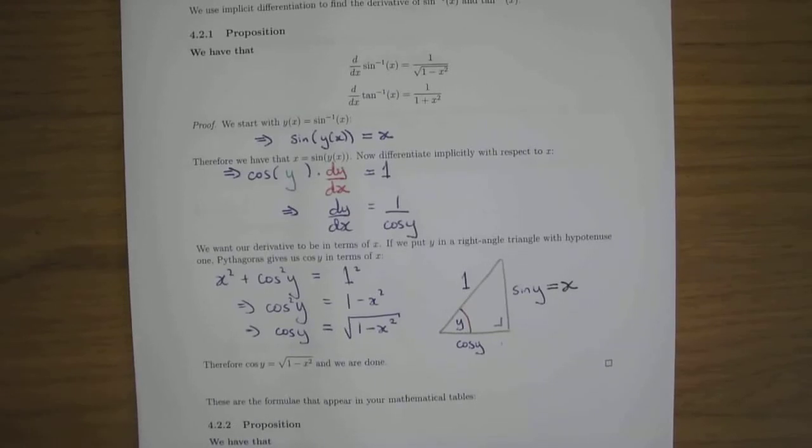Then what you're going to do is consider this as an implicit curve. You can just differentiate implicitly, so differentiate both sides with respect to x. Use the chain rule on sine of y of x because it's an outside inside situation.